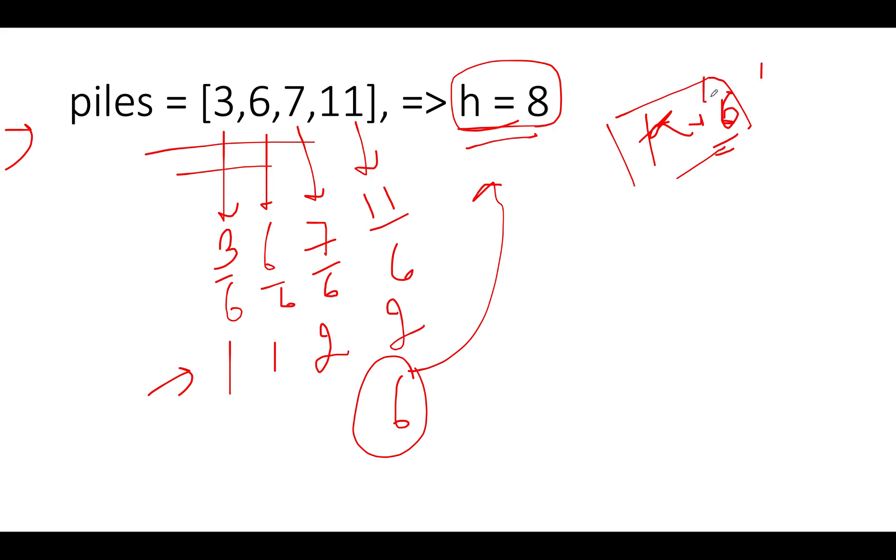So in totality how many hours would it take? 1, 2, 4, 6, it's going to take 6 hours. So this is within the limits of h, that means the value of 6 can be one of the probable solutions for this input array. Now we know given a value of k how can we calculate the number of hours it takes to eat the entire pile, and we can compare it with the value h.